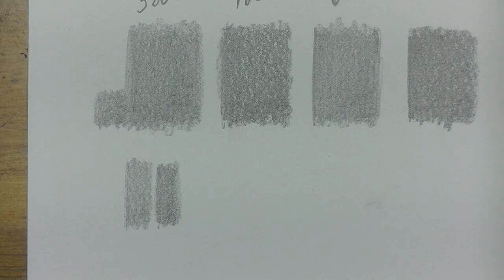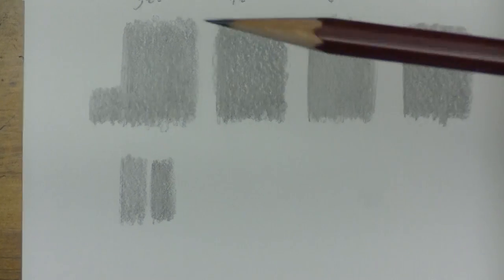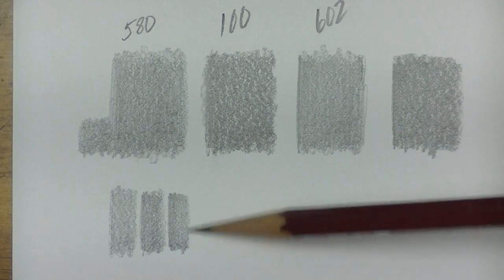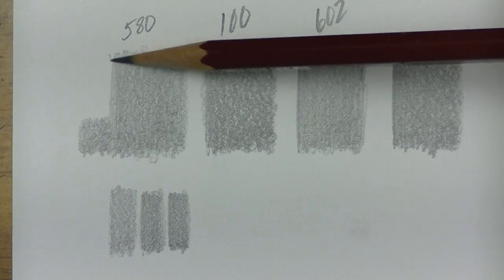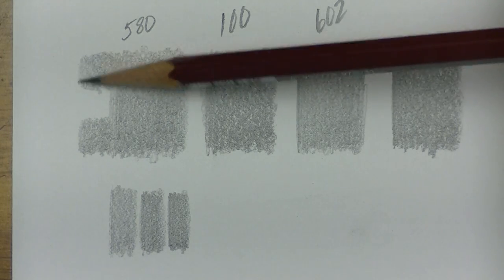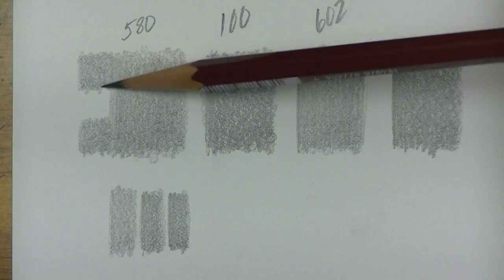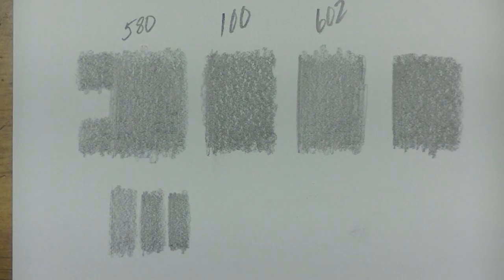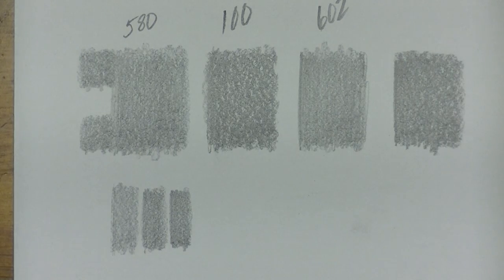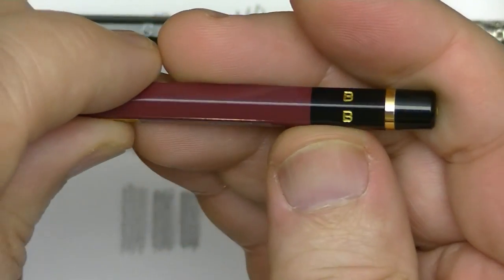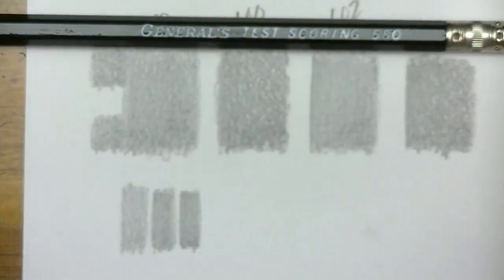But it looks pretty close like we may have a B we may have a winner. We've already tried the HB, the B, how about 2B. So this is the 2B pencil. And I'm going to have it come off this end here. Oh that 2B is so nice and smooth you can just buy Mitsubishi 2B pencils and be happy with that. Alright so I think we found that the test scoring 580 pencil is much like a B pencil using the Mitsubishi scoring system here.